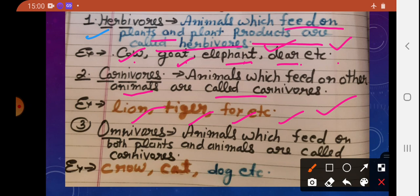Third category is omnivores. Animals which feed on both plants and animals are called omnivores. Examples include crow, cat, and dog.